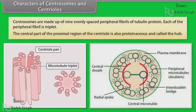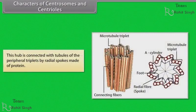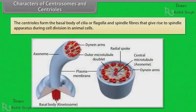The central part of the proximal region of the centriole is also proteinaceous and called the hub. This hub is connected with tubules of the peripheral triplets by radial spokes made of protein. The centrioles form the basal body of cilia or flagella and spindle fibers that give rise to the spindle apparatus during cell division in animal cells.